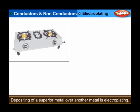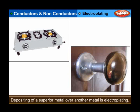Applications of electrolysis. Electroplating: iron articles such as gas stoves, cycle parts, door handles, etc. are chromium plated. Ornaments made of copper are silver plated or gold plated.